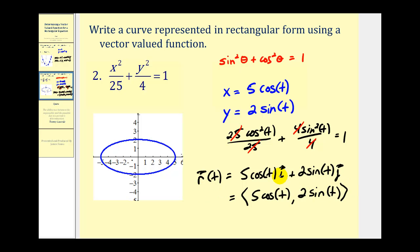However, now that it's a vector-valued function, it has an orientation. If we let t = 0, the x-component would be 5 and the y-component would be 0, so we'd be at this point here.